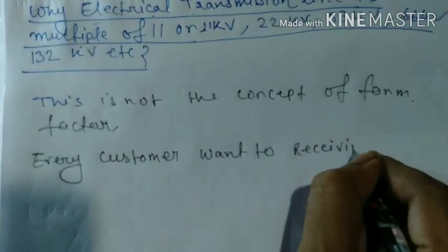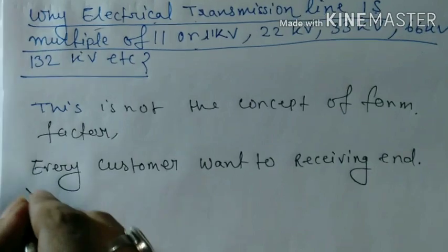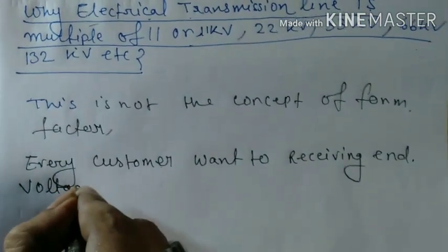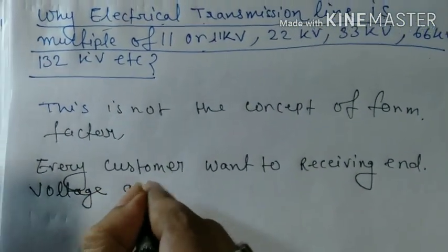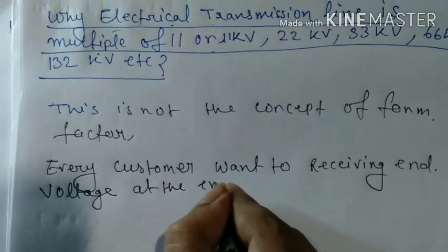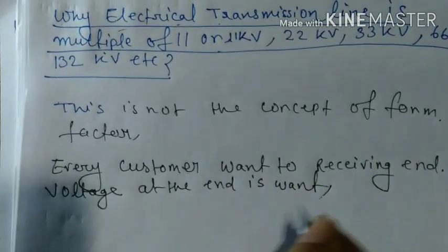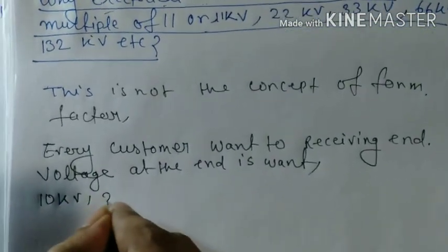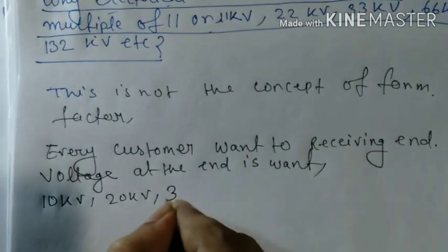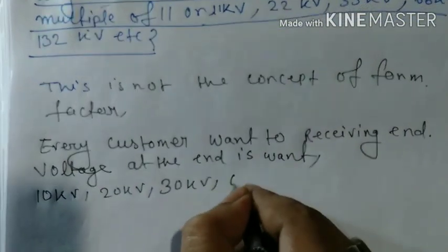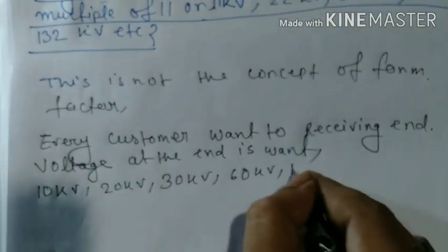10kV, 20kV, or multiples of 10. We get 10kV, 20kV, 30kV, 60kV, or 120kV. It is the demand of the customer, so a distribution company always needs to supply the receiving end voltage in these multiples of 10.